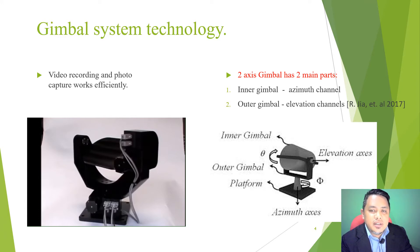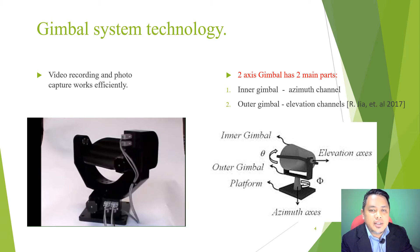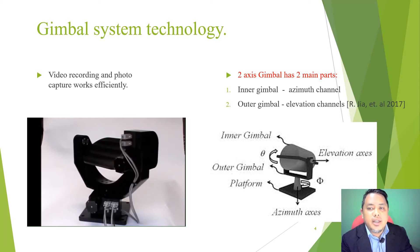This system consists of two gimbals attached together with orthogonal pivot axes. There are several types of gimbal: one axis, two axis, and three axis, but for this research we are focusing on two axis gimbal. The gimbal has two main parts: inner and outer gimbal, also known as azimuth and elevation channels. The inner gimbal contains one camera that captures the image or target object from a gyroscope sensor and one DC motor to drive the inner gimbal at a certain angle. Meanwhile, one DC motor and one gyroscope sensor are required on the outer gimbal.